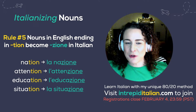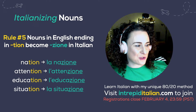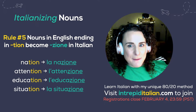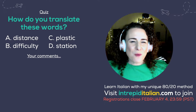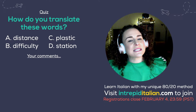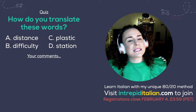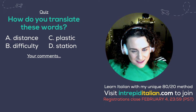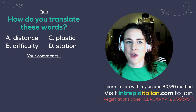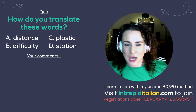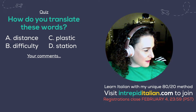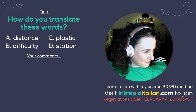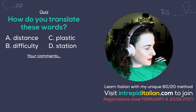So let me know if you can think of any other examples — but on the next slide I'm going to give you a little quiz. Are you ready? I hope you have a pen and a piece of paper, because here it comes. Based on the five rules I've shared today, how would you translate these words: distance, difficulty, plastic, and station? Focus on those last few letters and what you can swap them out for based on the rules we've covered.